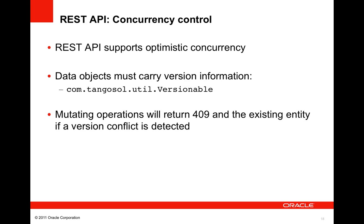The last major feature of the Coherence REST API is optimistic concurrency control for mutating operations. If your data objects and their representations carry version information, the REST API will compare the included version number against the one in the current cached object. If the versions match, the operation completes as normal. If the versions differ, the REST API returns a 409 to indicate the conflict.